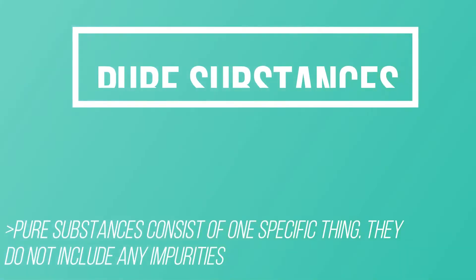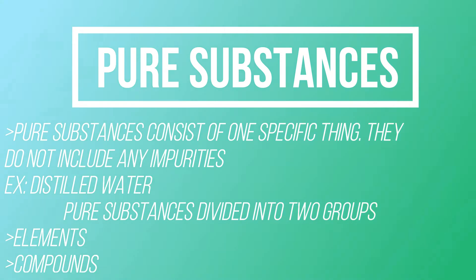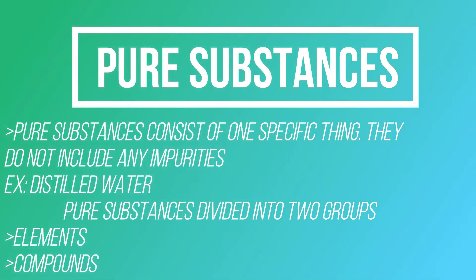Let's talk about pure substances, elements and compounds. Pure substances are divided into two parts: elements and compounds. Pure substances consist of one specific thing and do not include any impurities. For example, distilled water contains only water molecules.